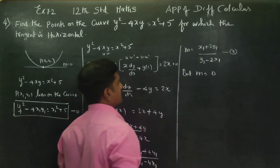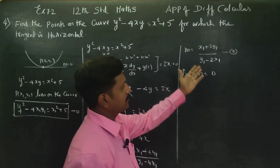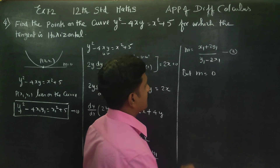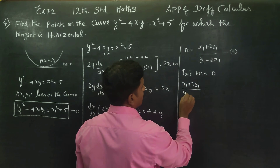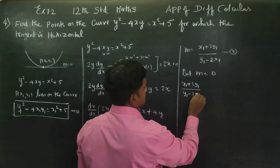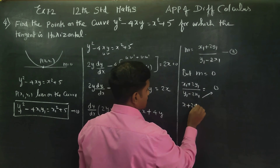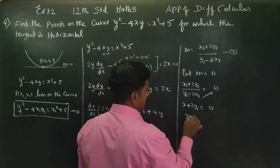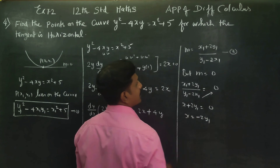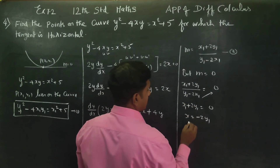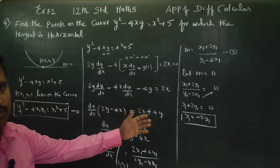Since this is a horizontal tangent, slope m equals 0. So (x1 plus 2y1) divided by (y1 minus 2x1) equals 0. Cross-multiplying: x1 plus 2y1 equals 0, which gives x1 equals minus 2y1. This is equation number 3.